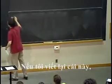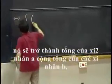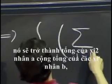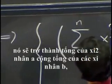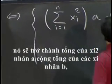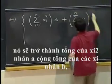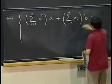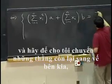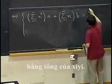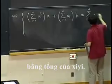So if I rewrite this, it becomes sum of xi squared times a plus sum of the xi times b. Let me move the other guys to the other side. It equals sum of xi*yi.